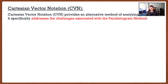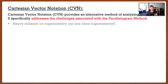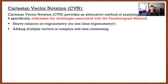Cartesian vector notation, or CVN, provides us with an alternative method of analyzing vectors and more importantly it specifically addresses the challenges we had with the parallelogram method. Those challenges being namely the heavy reliance on trigonometry — no one likes trigonometry. The second thing is adding multiple vectors is complex and time consuming.